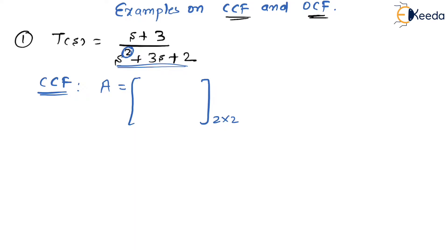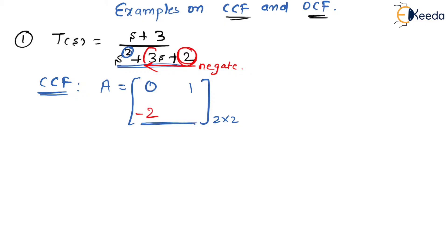We always start with 0, 1 in the first row. So the first row is [0, 1]. Now, is this the last row of the matrix? No — the last row is found by taking the reverse of the denominator coefficients and negating them. So the first coefficient is +2, giving us −2, and the next coefficient is 3, giving us −3. So the last row is [−2, −3].